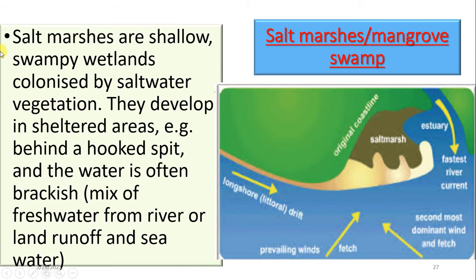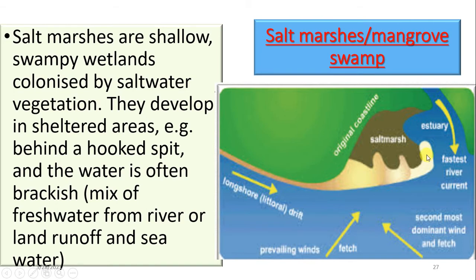Mangrove swamps, or salt marshes, are shallow swampy wetlands — you can see them here — that are colonized by saltwater vegetation. They develop in a sheltered area, usually behind a spit. As longshore drift deposits materials, the spit connects the shoreline to the mainland and grows into the sea, and behind it you have your salt marsh or mangrove swamps.